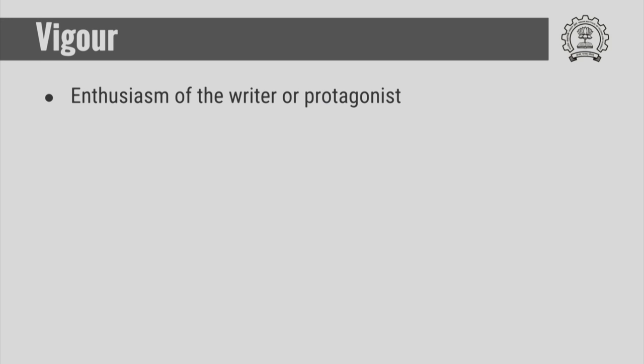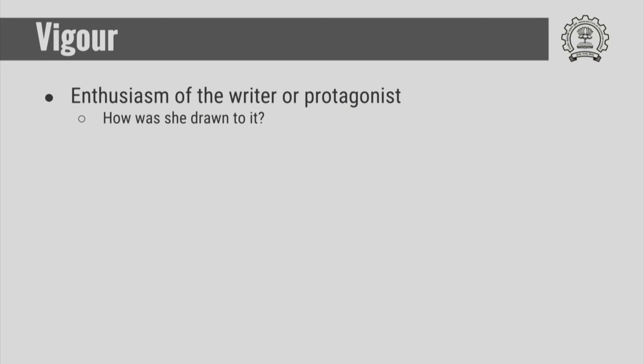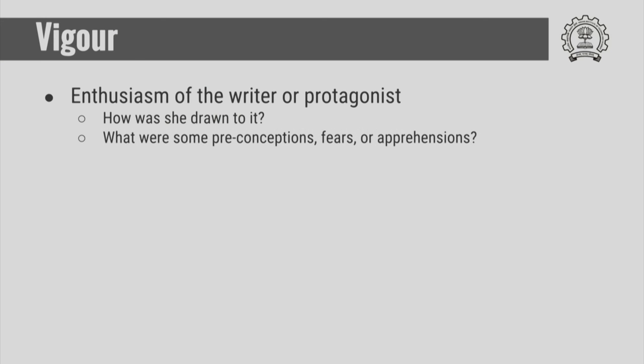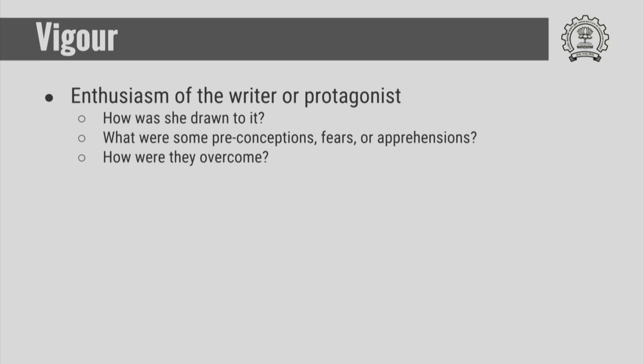It is also important to represent the vigor — the vigor that you felt as an author or as a scientist doing the work. You are the protagonist in this. You have done the work, or maybe you are writing on behalf of somebody else. You need to bring out the enthusiasm of the protagonist. How was she drawn into this problem? What social compulsions, constraints, or challenges brought this author to work on this problem? Bring that rigor in, and show how she overcame all these things while solving the problem.